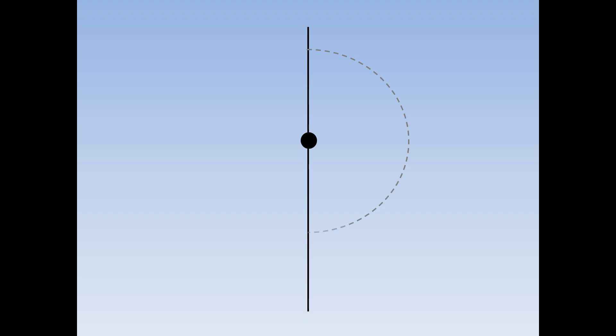We are going to draw a perpendicular line that goes through this point that is not in the centre of the line. Open up your compass so it is nearly to the end of the line and draw a circle all the way round the point. Then move the sharp end over to where the circle and the line cross over. Open the compass to about three quarters of the diameter of the circle and draw a half circle.